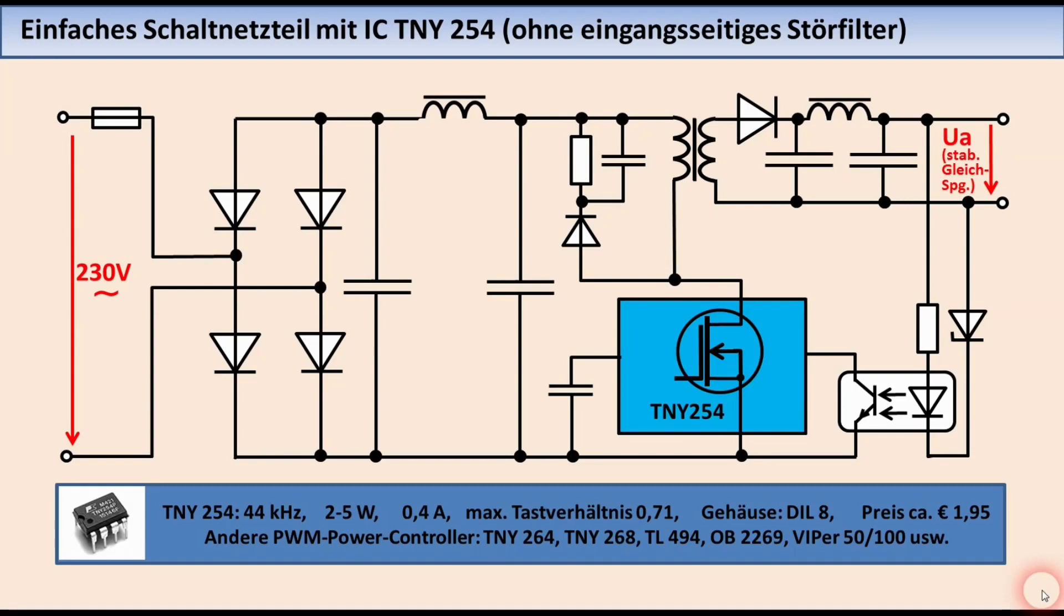Zum Schluss noch die Schaltung eines einfachen Schaltnetzteils mit dem integrierten Schaltkreis TNY254. Dieser Schaltkreis enthält sowohl den Regelkreis als auch die Steuerschaltung zur Erzeugung der PWM-Signale als auch den Leistungsfeld-Effekt-Transistor. Für diesen elektronischen Aufwand ist der Preis für das IC mit ca. 2 Euro erstaunlich niedrig. Der Ausgangsstrom von maximal 0,4 Ampere und die Leistung von bis zu 5 Watt sind zwar nicht übermäßig hoch, jedoch für das verwendete kleine Dill-8-Gehäuse, wie in der Abbildung dargestellt, erstaunlich hoch. Auch die anderen Baugruppen in dieser Schaltung lassen sich leicht identifizieren.